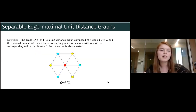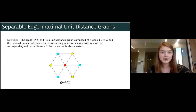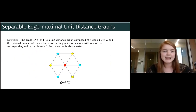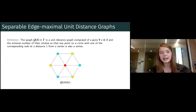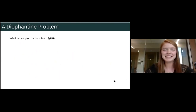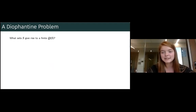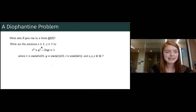We define the graph Q(S) as the unit distance graph composed of s-gons for every s in the set S, with the minimal number of their rotates so that any point on a circle with one of the corresponding radii at distance one from a vertex is also a vertex — this builds in our maximality constraints. At this point, we have a nice Diophantine problem emerging from this geometric question: what sets S give rise to finite graphs Q(S)? This amounts to asking for rational solutions s and z to our cogonality equation — the law of cosines twist.